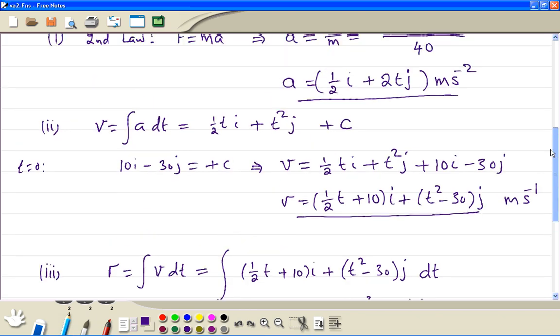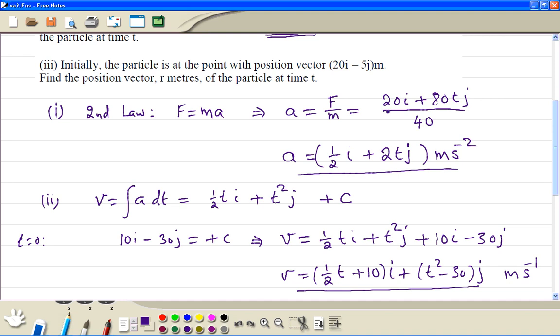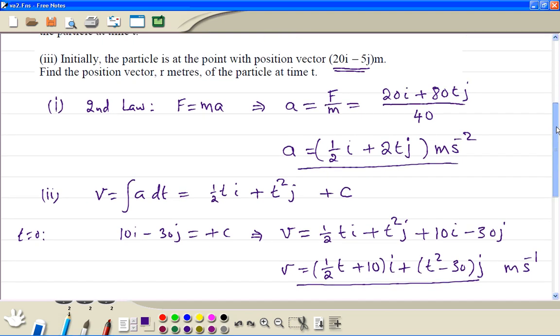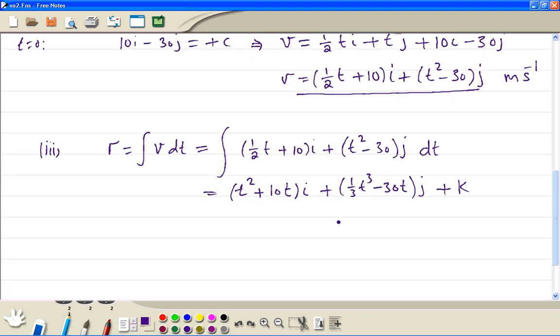We are told when t equals 0, r is 20i minus 5j. At t equals 0, that's what k is.